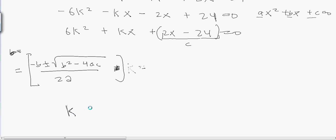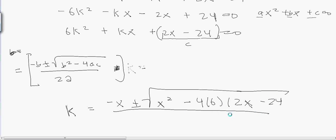So k is equal to -x ± √(x² - 4 × 6 × (2x - 24)), and that's all over 2 × 6.